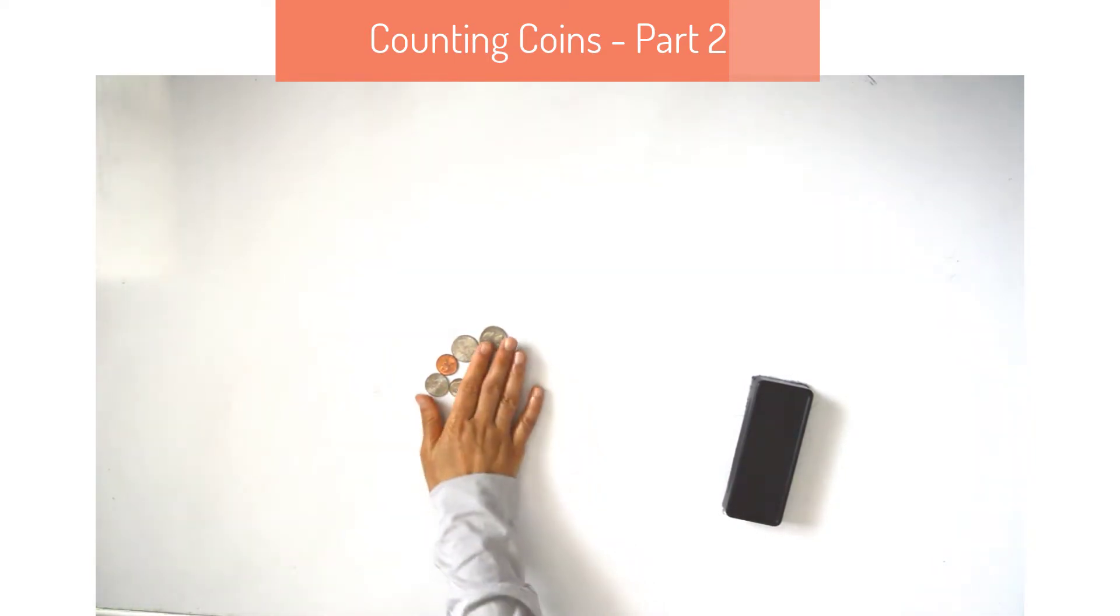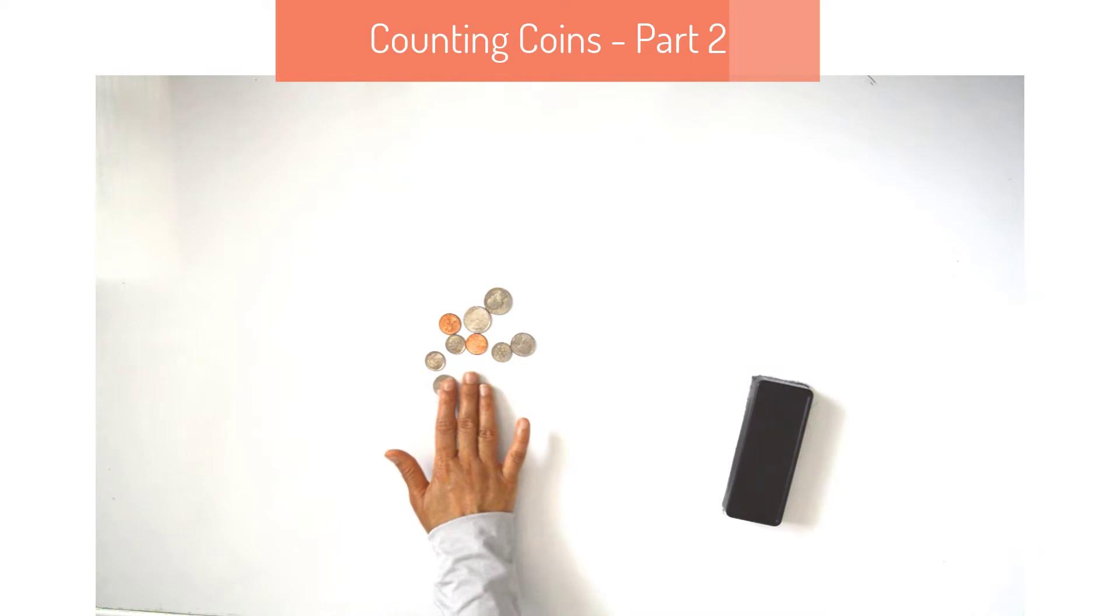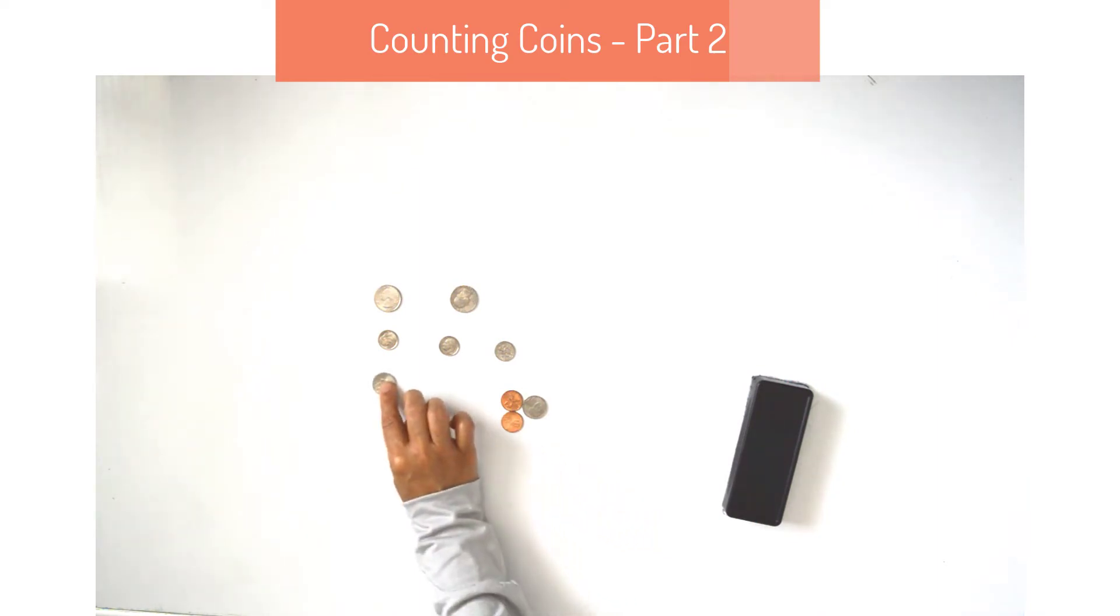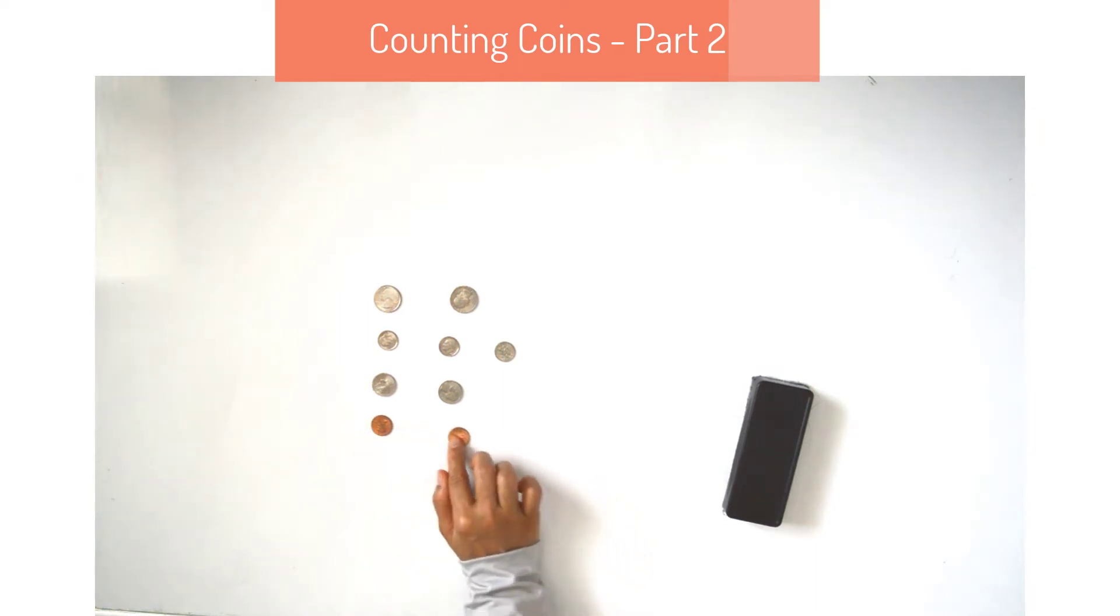We can count coins in any order, but it's better to count first that has more value. If you have some quarters, dimes, nickels and pennies, which coin will you start counting first? Let's put our coins in order from highest to lowest value. Quarter is worth 25 cents, dime is worth 10 cents each, nickel is worth 5 cents each, and penny is worth 1 cent each.